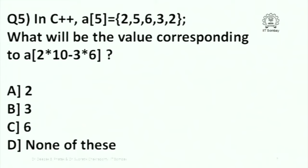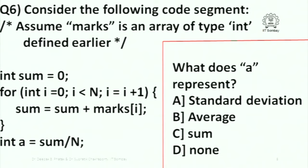An array A of size 5 is defined with initial values 2, 5, 6, 3, 2. What will be the value corresponding to A of this expression? A simple question — if you have seen the lectures you should be able to answer it very quickly. Here is a core segment practically lifted straight from a lecture. It presumes that marks is an array of type int defined earlier. You can also presume that the value of n is less than or at most equal to the size of the array. So if this core segment is run, what does A represent? Standard deviation, average, sum, or none of these?